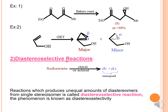Moving on to diastereoselective reactions: here you take a substrate in the presence of a chiral or achiral reagent, and it results in two diastereomers in unequal amounts. Reactions which produce unequal amounts of diastereomers from a single stereoisomer are known as diastereoselective reactions. The phenomenon which takes place is known as diastereoselectivity. Note: in the slide, the spelling of 'reaction' has a typo — it is R-E-A-C-T-I-O-N, not with a double 'I'.